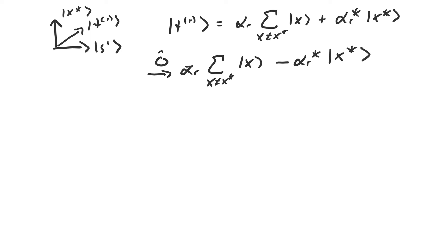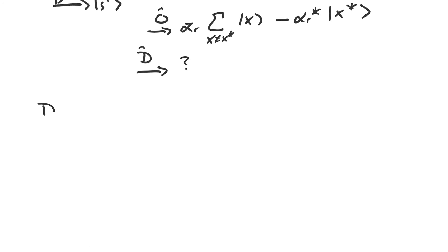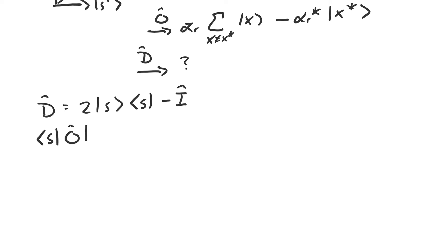It's a little trickier to figure out what the Grover diffusion operator does to these amplitudes, so let's break it down. Remember that D is equal to two times the projection onto the uniform superposition minus the identity operator. The first step in figuring out how D affects these amplitudes is to figure out what taking the inner product of s with O acting on ψ_r is.